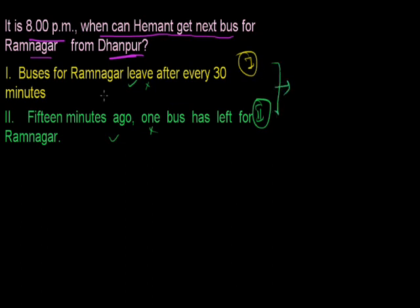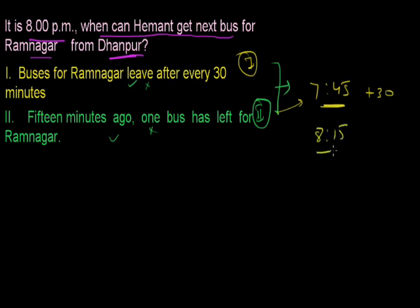If I combine both statements: buses leave every 30 minutes, and 15 minutes ago one bus has left. Since it is now 8 p.m., the last bus departed at 7:45. Adding 30 minutes, the next bus departs at 8:15. So Hemant will get the bus at 8:15. Both statements are required here; therefore the answer is option C — both statements together are necessary to get the answer.